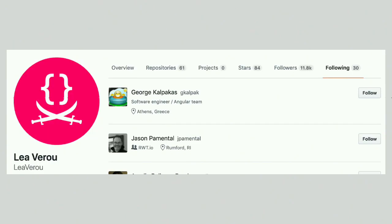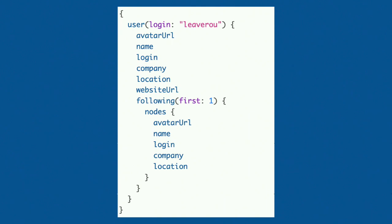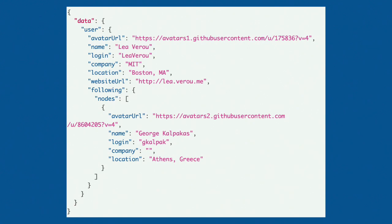If we wanted to also display who that person follows on GitHub, we can extend the query by adding a 'following' field. We specify that we want only the first result, and for that result we also want information similar to what we asked for the main user — name, login, et cetera. The response follows the same shape as the query, with exactly the information we asked for. Company is not specified, so it's just an empty string, and everything is as we expected.